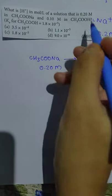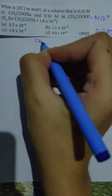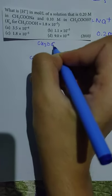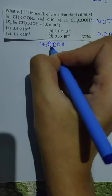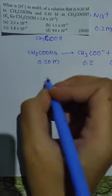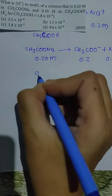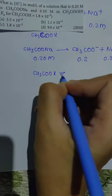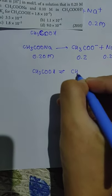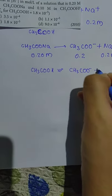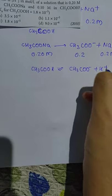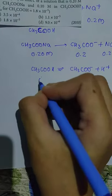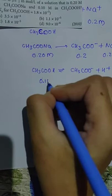CH₃COO⁻ is a weak acid — we will treat it differently. CH₃COO⁻ does not completely dissociate. It equilibrates with H⁺. The starting concentration is 0.10 mol/L.